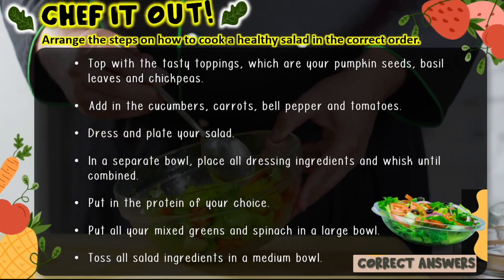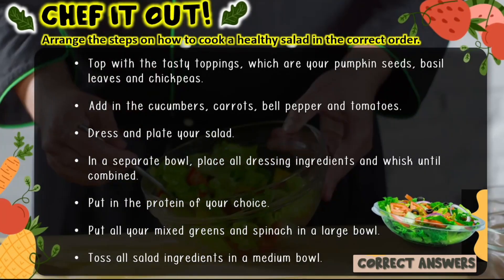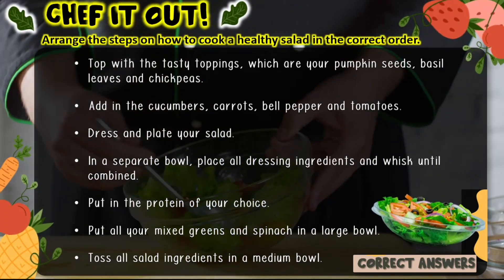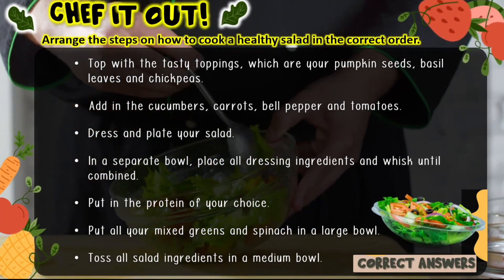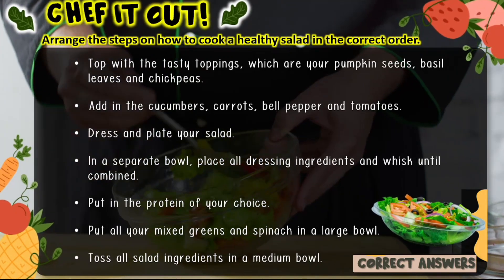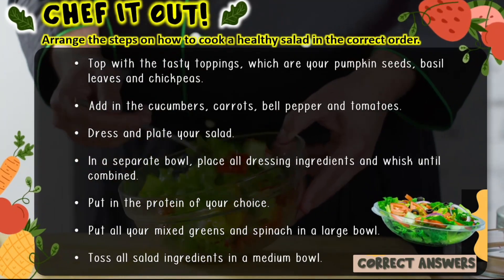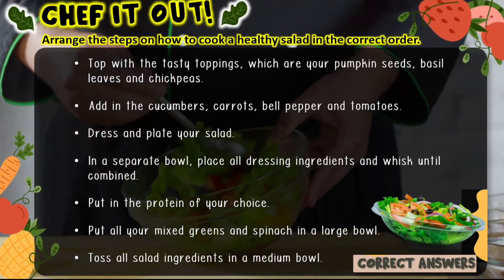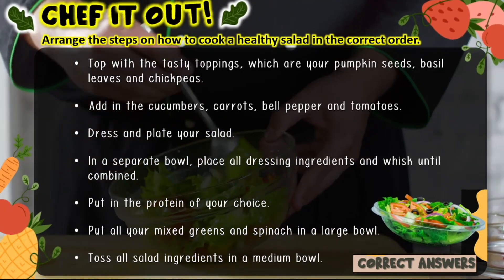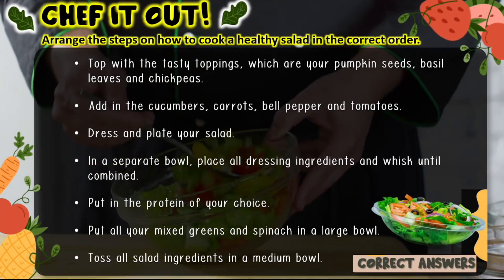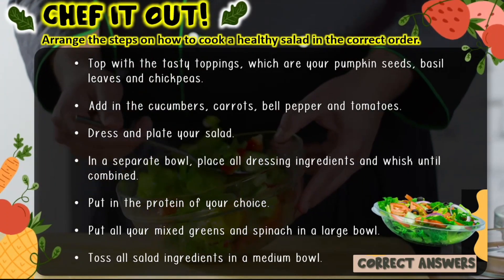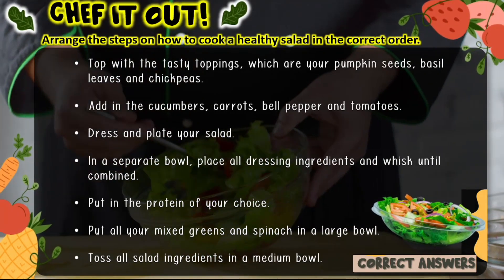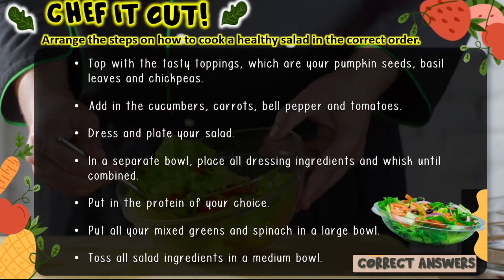In this activity, the chronological thinking skills of your students will be tested. They better analyze carefully so that their salad will not look and taste awful. Here are the jumbled steps given for students to rearrange: top with the tasty toppings — pumpkin seeds, basil leaves, and chickpeas; add in the cucumbers, carrots, bell pepper, and tomatoes; dress and plate your salad; in a separate bowl, place all dressing ingredients and whisk until combined; put in the protein of your choice; put all your mixed greens and spinach in a large bowl and toss all salad ingredients in a medium bowl.